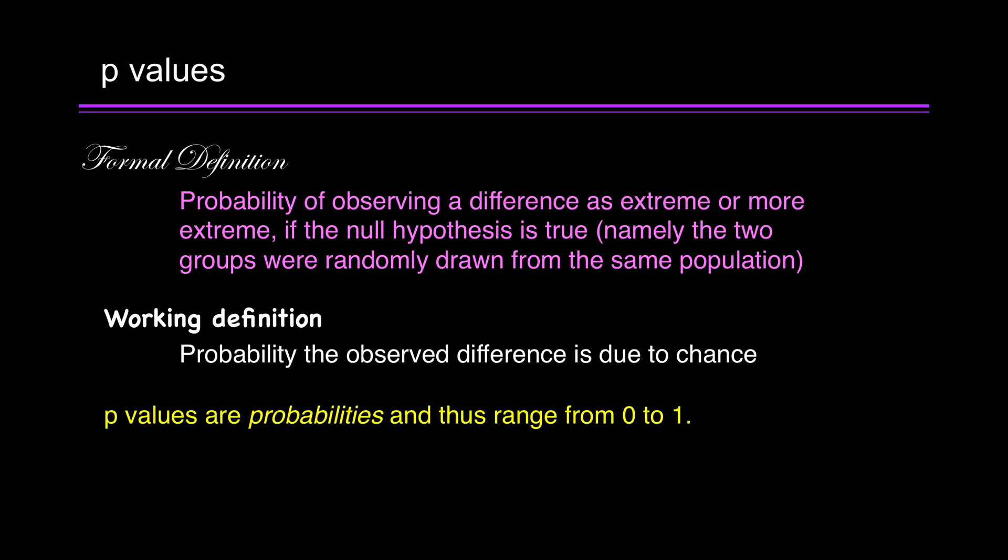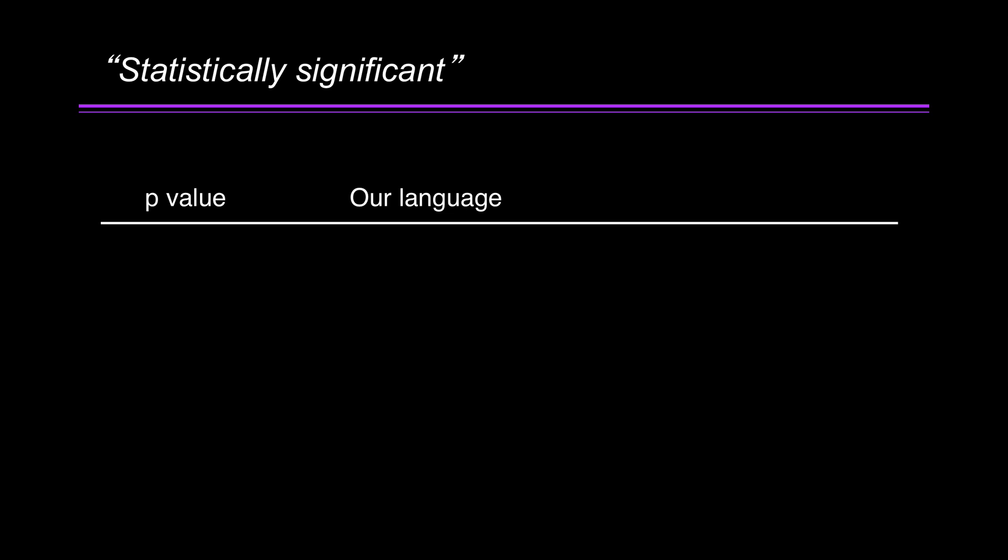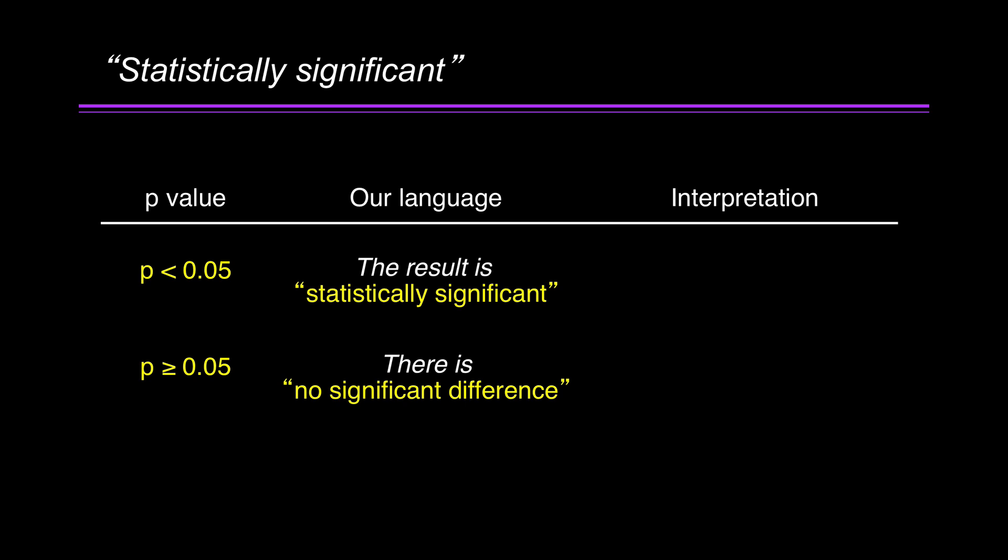P-values are probabilities and thus range from 0 to 1. A high p-value means it is likely that the observed difference is due to chance. A low p-value means it is unlikely the observed difference is due to chance. Now this is the most important slide. It tells you our definition of statistically significant. If the p-value is less than 0.05, less than 5%, our language is the result is statistically significant. If the p-value is greater than or equal to 0.05, or 5%, our language is there is no significant difference. Here's how we interpret it. A p-value of less than 5%, we say the observed difference is not due to chance.